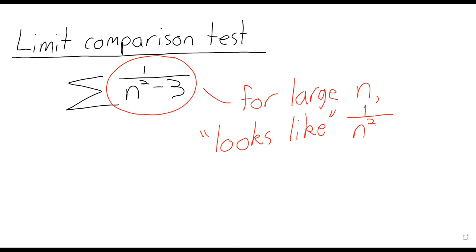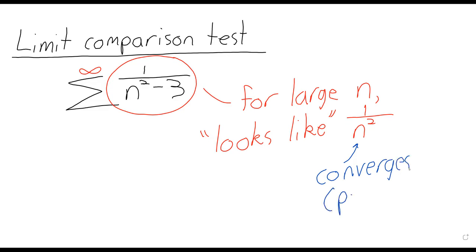And this is just a fact about polynomials: when a polynomial is large, it looks like its leading term. And n is going all the way up to infinity. So we sort of made the argument that because this looks like 1 over n squared, and 1 over n squared converges — it's a P series — since this looks like a convergent series, it probably converges.